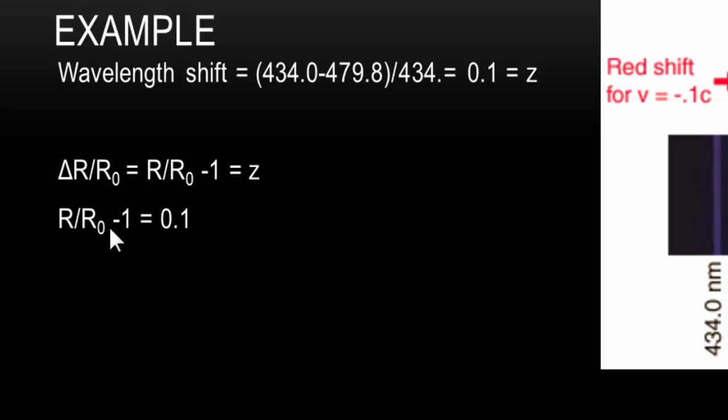We can put the values in there. To simplify this, we can add 1 to both sides. So R divided by R nought is equal to 1.1.